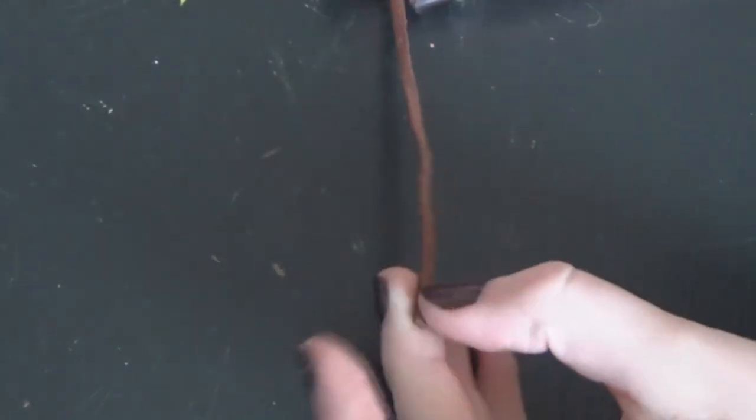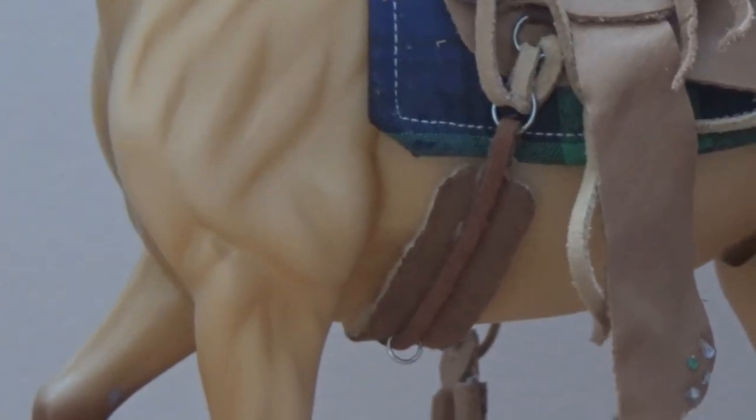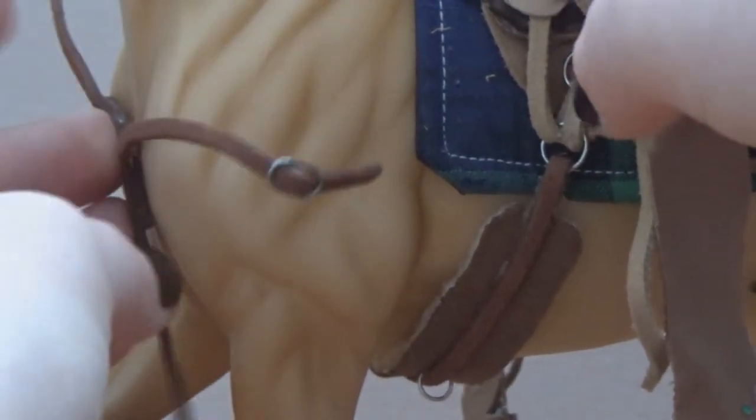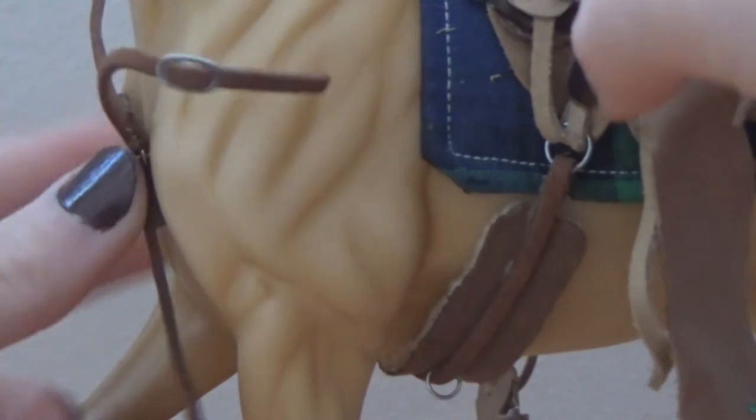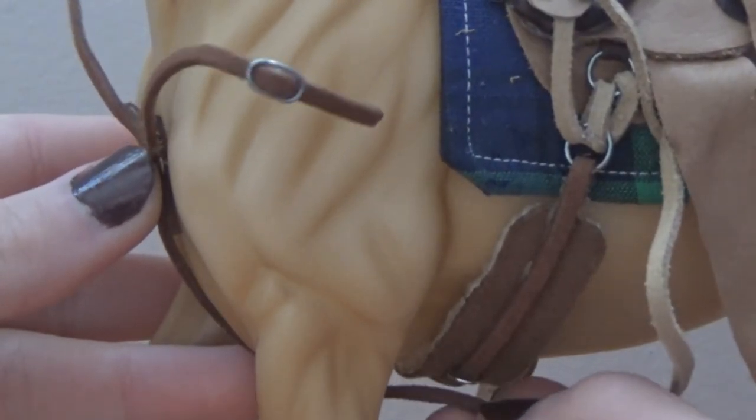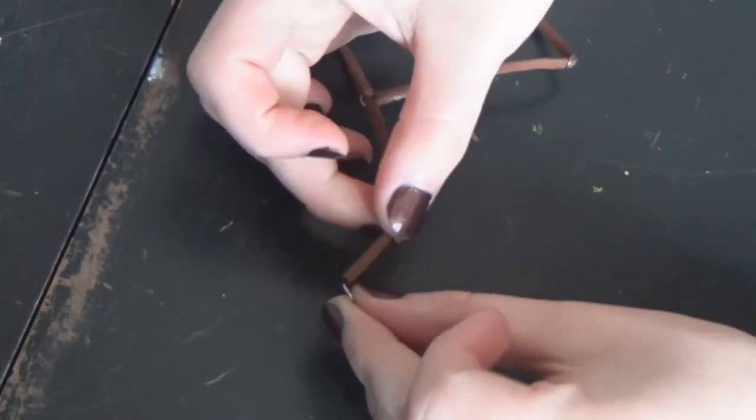Next you have to glue another jump ring to the bottom piece of the breast collar. In order to do that, you're going to have to re-measure it just to make sure everything fits properly. So just hold it where you want it to be, and then measure the bottom piece like this. Once that's all measured and cut, you can just glue on your jump ring, take your pliers and open up the bottom jump ring, and slide on a lobster clasp.